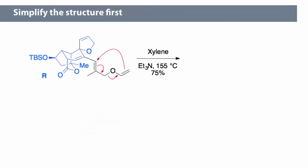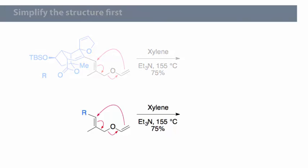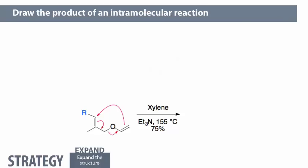We'll use the blue R group to represent the left-hand portion of the molecule not involved. Chemists commonly use the letter R to represent different parts of a molecule, which simplifies the structure and lets us focus just on the reacting portion. We expand the structure to make sure we keep track of all the atoms.